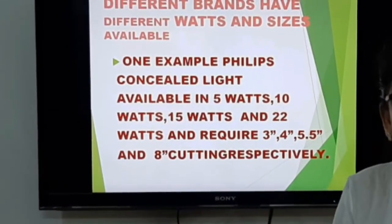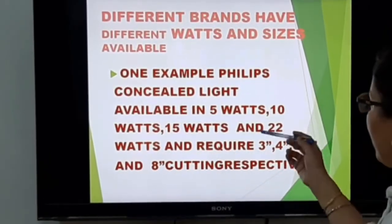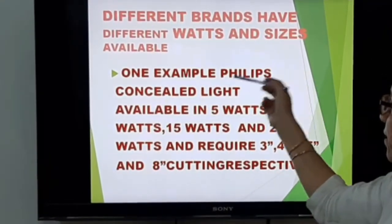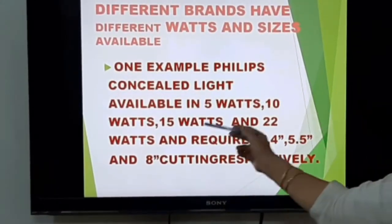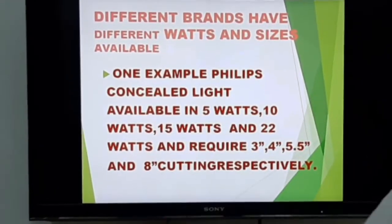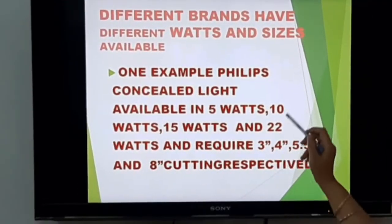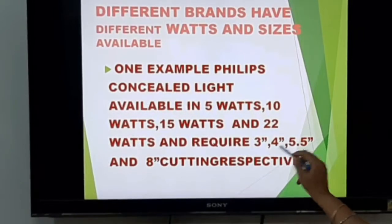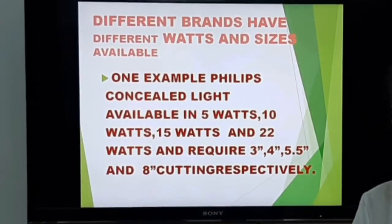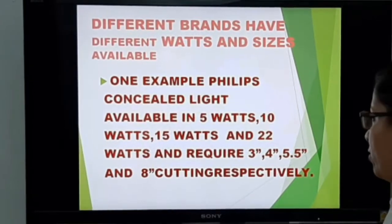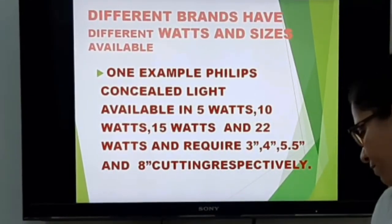Their sizes differ by brand. For example, Philips concealed lights come in 5 watts, 10 watts, 15 watts, and 22 watts. For 15 watts we need 5.5 inches cutting space, and for 22 watts we need 8 inches cutting space.